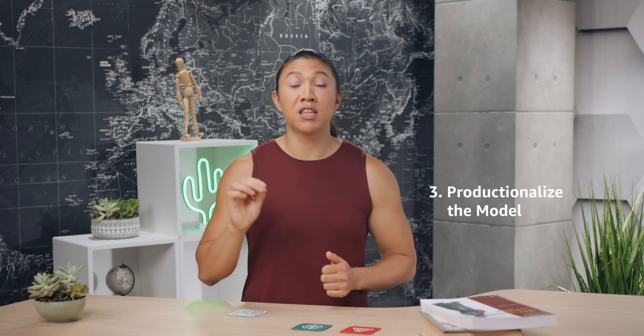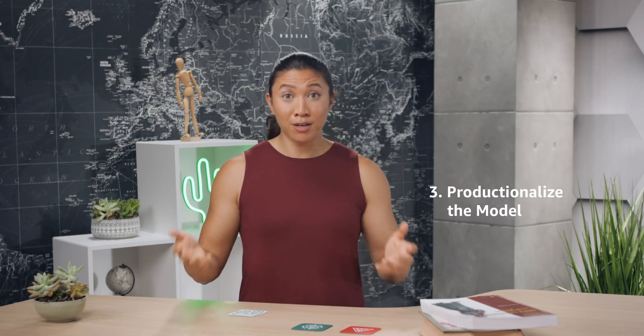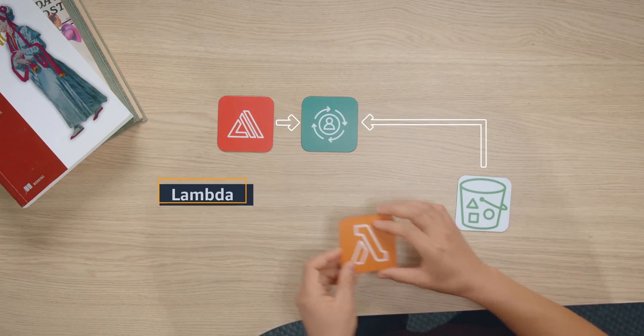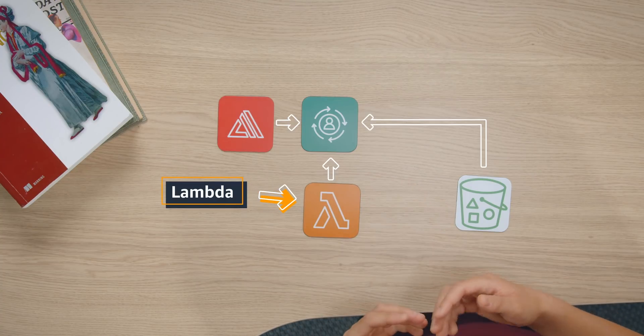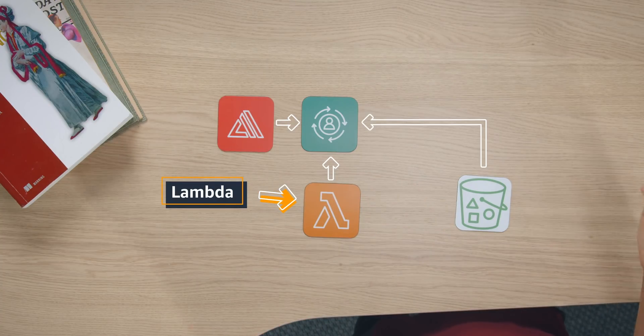The third step is to put the model in production, which Personalize calls a campaign. A campaign gives your trained model a unique Amazon resource name that you can pass in an API call to get recommendations via the Amazon SDK. This API will return an item ID and a score — the higher the score, the more likely it is that a user will click on that item. Use Lambda to make the request to the Personalize campaign and provide recommendations to your users.